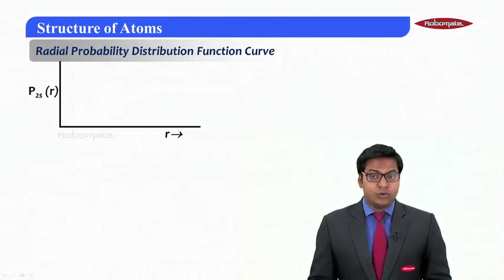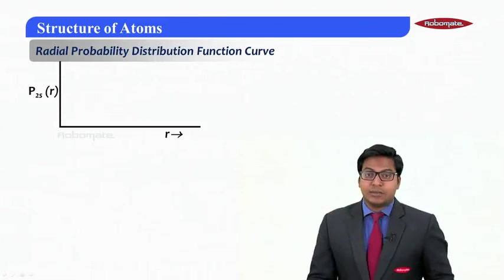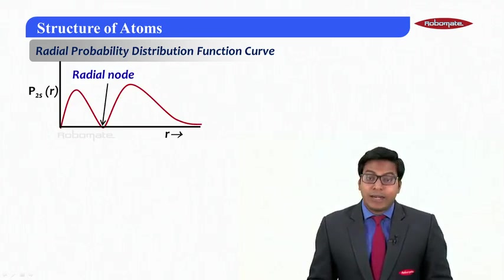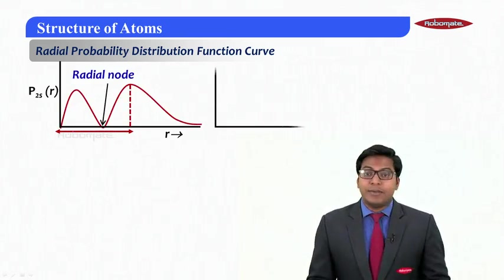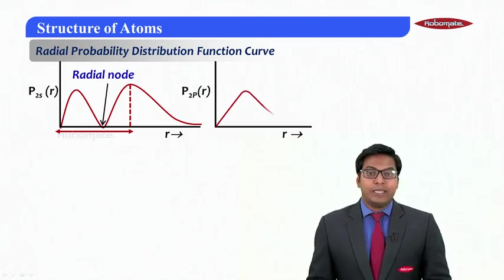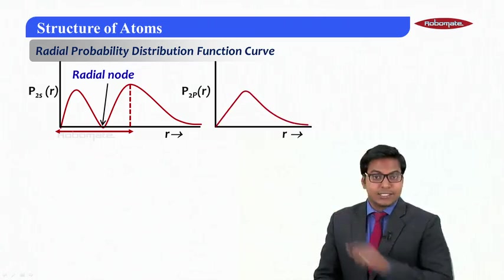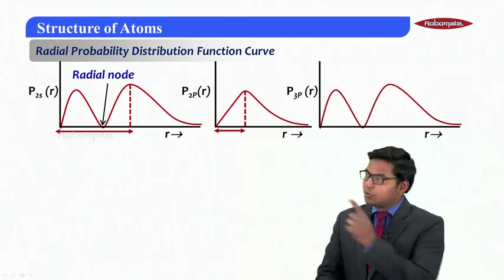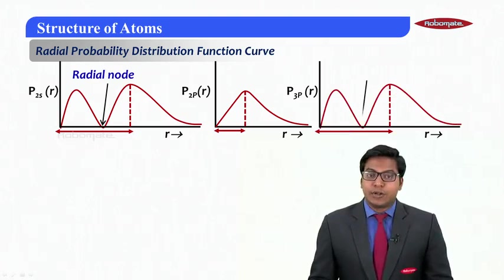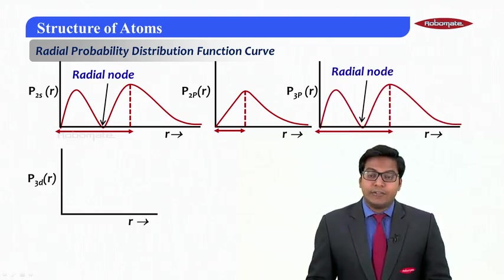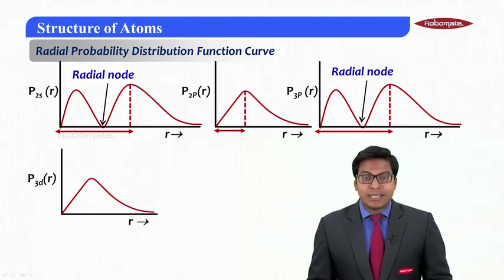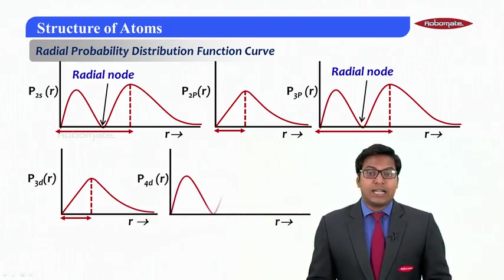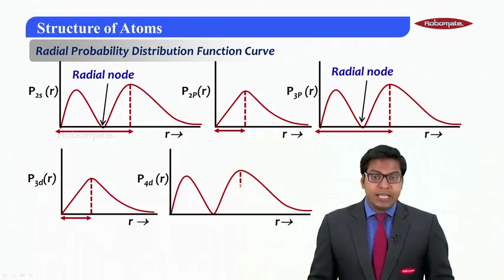If I keep drawing this for different orbitals, the total probability distribution curve versus r for 2s has one radial node with maximum radius of maximum probability at a distance. Similarly if I draw it for 2p I will get no nodes here. For 3p you would see it is quite similar to that of 2s with a radial node. For 3d it is quite matching to that of 1s and 2p. For 4d you would see the graph varies quite similar to 2s and 3p with one radial node.